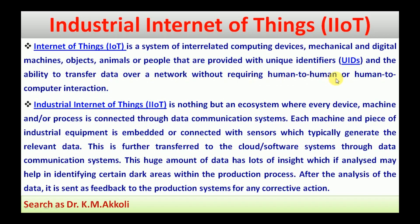Industrial Internet of Things, or IIoT, is an ecosystem where every device, machine, and process is connected through data communication systems. Each machine and piece of industrial equipment is embedded or connected with sensors which typically generate relevant data. This data is further transferred to cloud or software systems through data communication systems.